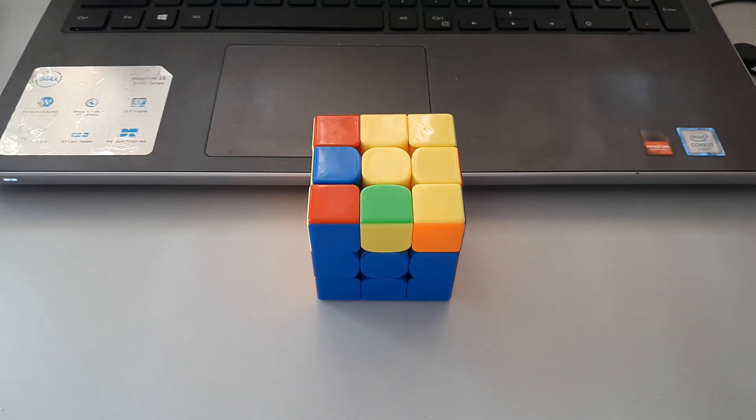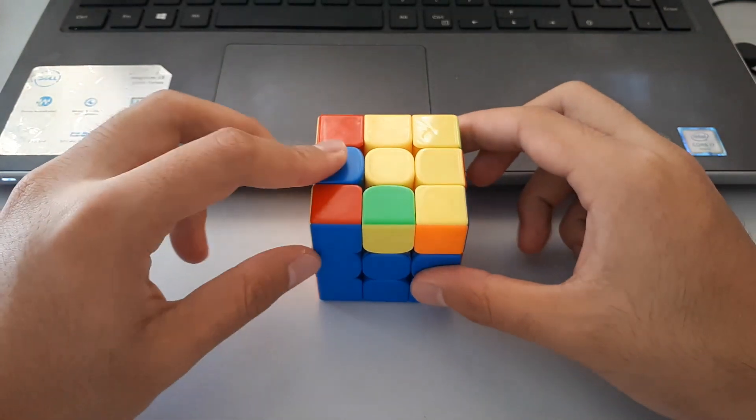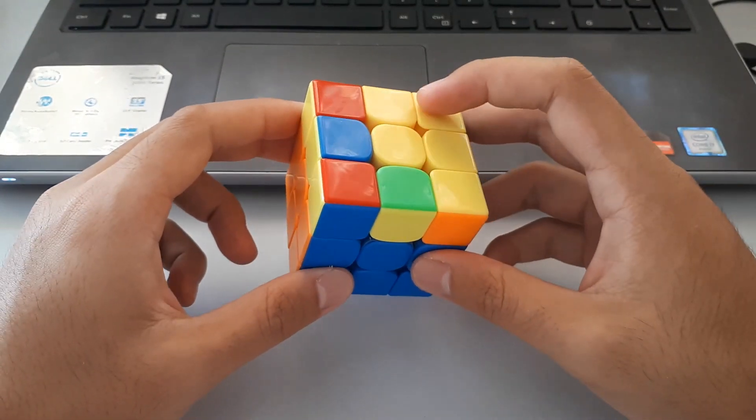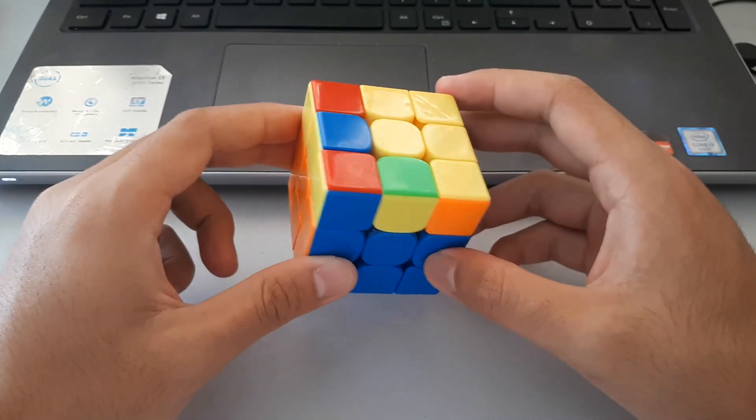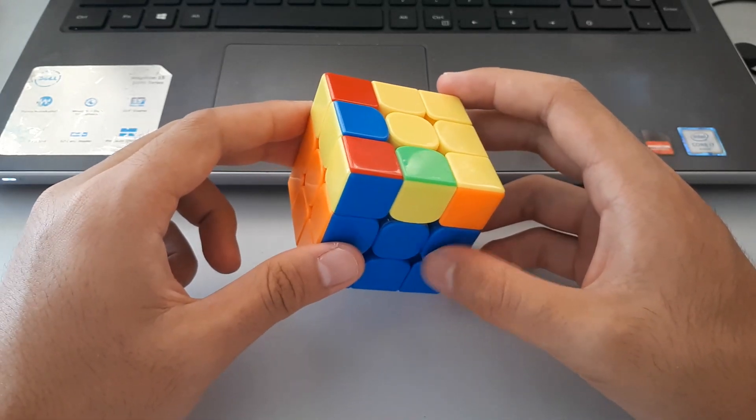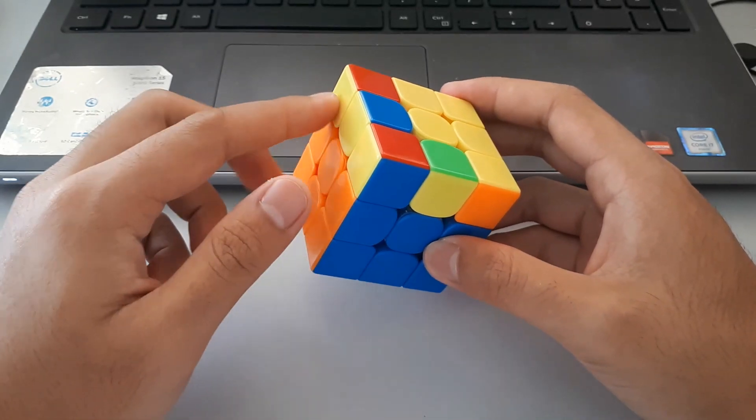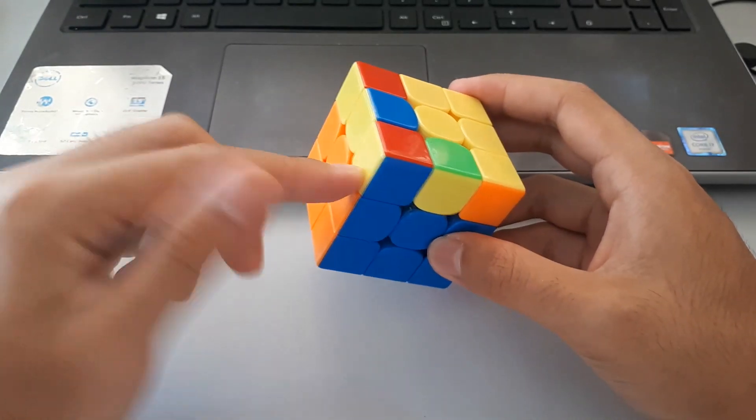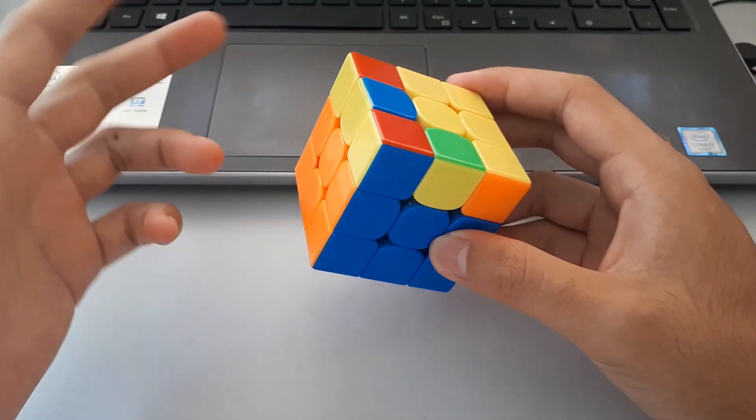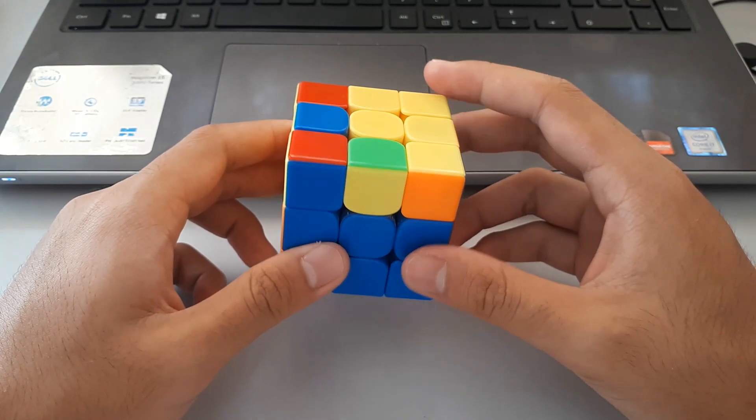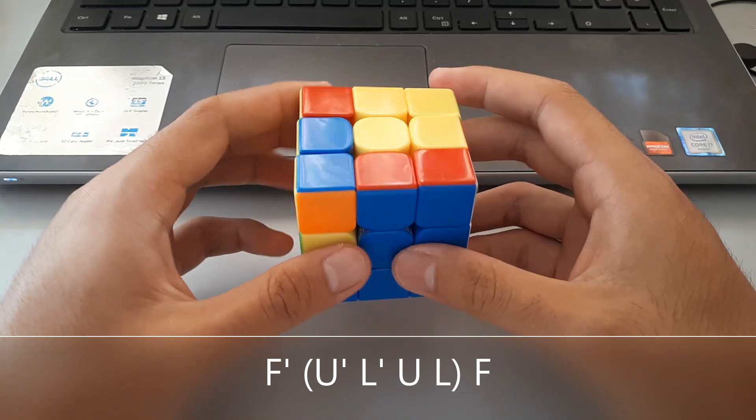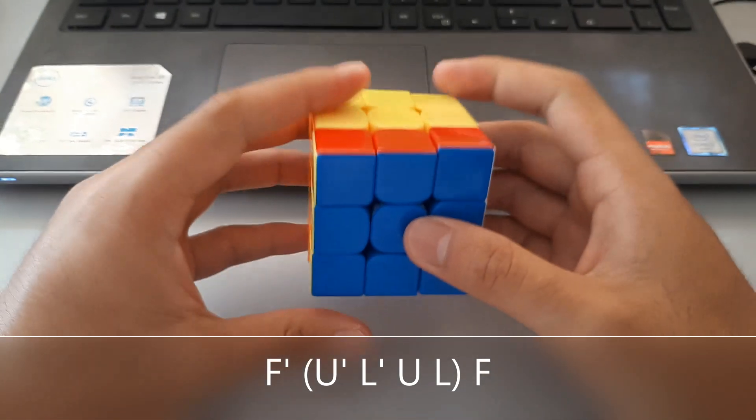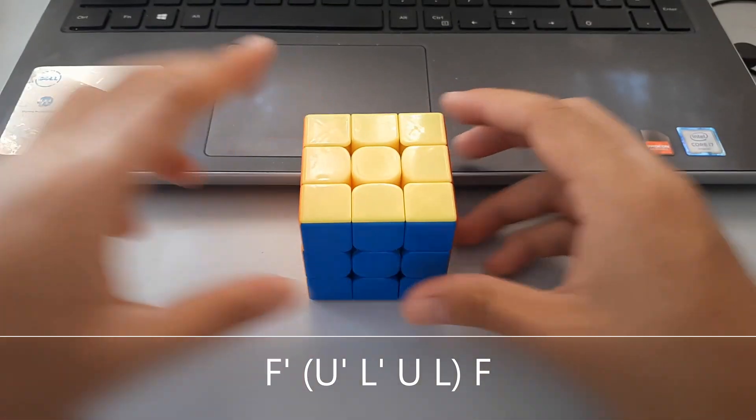Our next P case is on the other side now. Technically it's no longer a P, it's a Q, but it's still a P case. This time the bar is on the left-hand side, so we have to use our left hand for this algorithm. It's the same as the last one, but just mirrored for the left hand. F prime, then the inverse sexy on the left, then F to finish off.